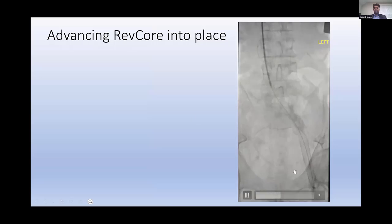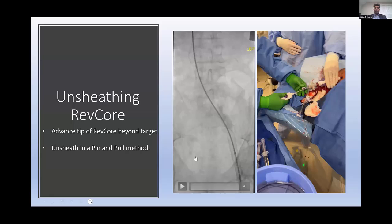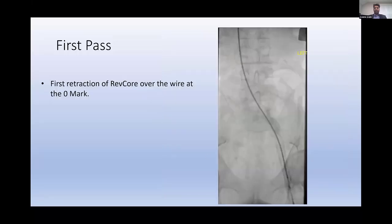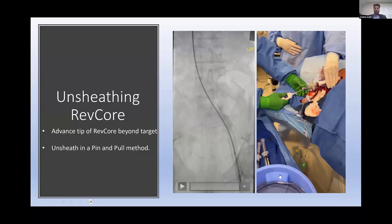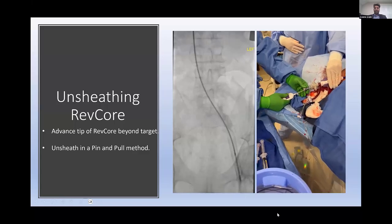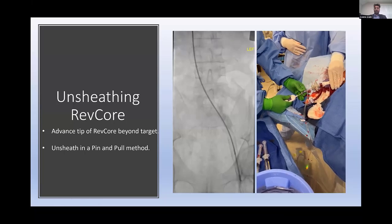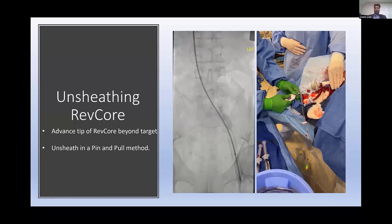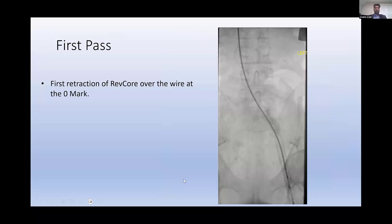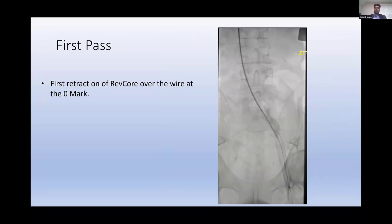Once you are beyond the target, you take your distal marker beyond your target. As you unsheath it, you advance the tip of RevCore beyond the target and unsheath using a pin-and-pull method — just like deploying a stent in the past. On your first pass of RevCore over the wire, you're feeling for tactile feedback. Make sure you're not going through an interstitial space at the confluence, as the wire may find that path when crossing. Always use IVUS beforehand.